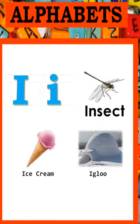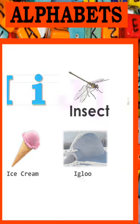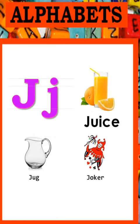I - I - Insect, Ice Cream, Igloo. J - J - Juice, Jug and Joker.